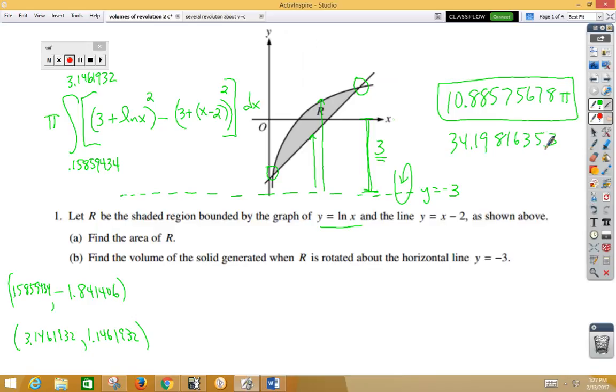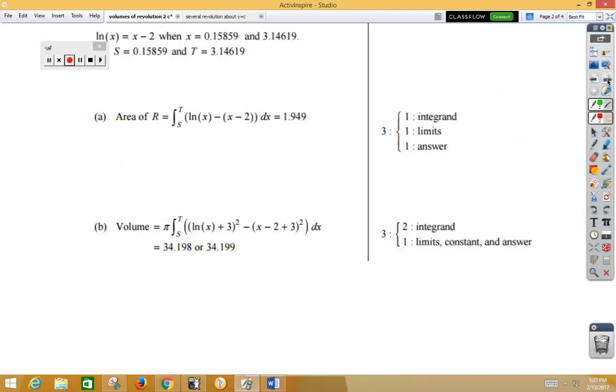So either one would be acceptable, and if we check against that, we get 34.198 or 199. Again, set up, and we just picked up three points on the AP exam.